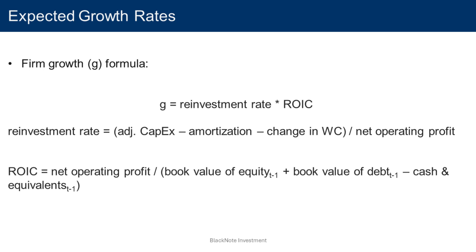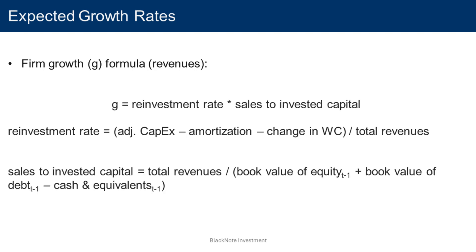However, there exists also another variant of this second configuration which isn't based on operating income — which for many companies is a negative value — but rather is based on total revenues, which by nature can't be negative. The sales-to-invested capital ratio is used instead of the return on invested capital, and the reinvestment rate is expressed as a percentage of revenues rather than as a percentage of net operating profit.